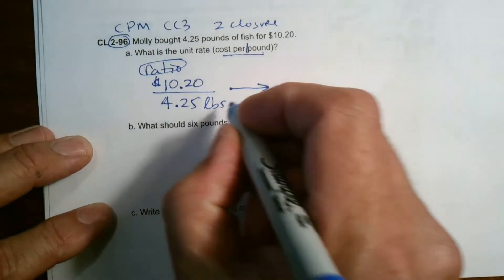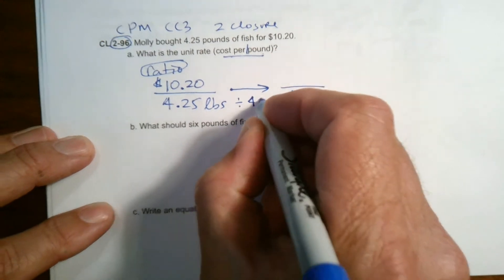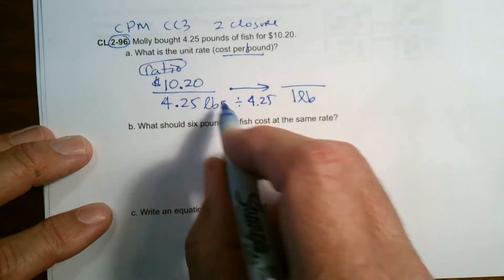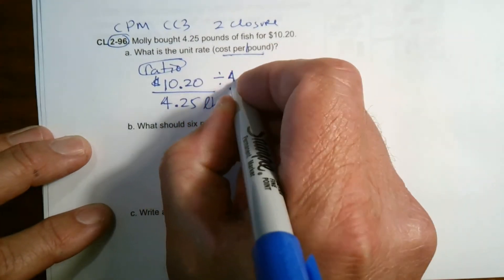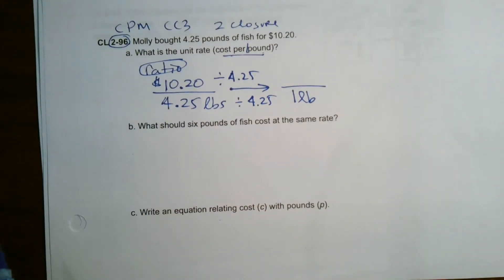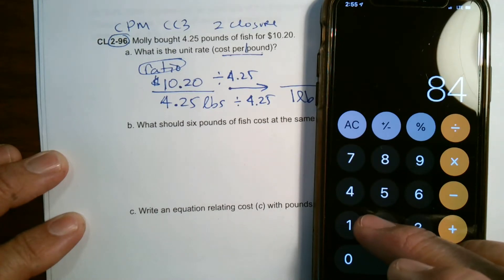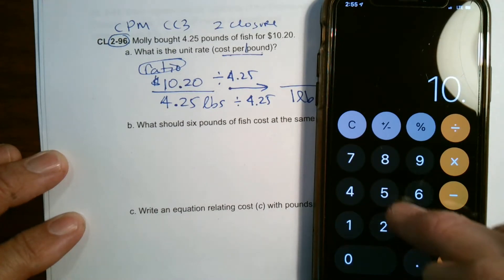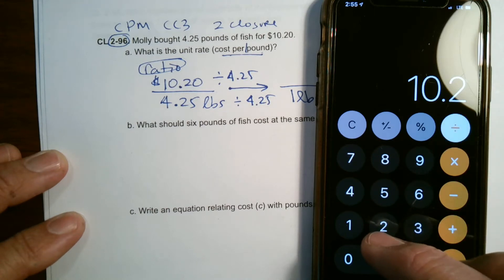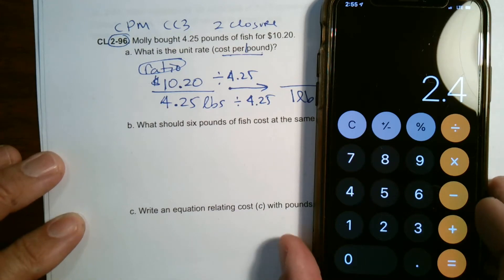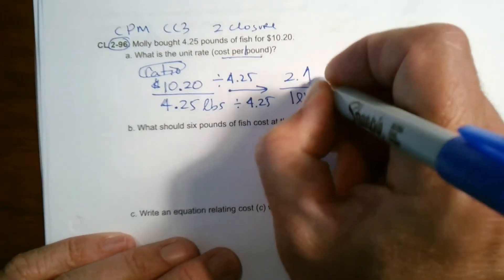Well, to get to be one, it would just be divided by 4.25, right? 4.25 divided by 4.25 is one. So what you do to the bottom of a fraction, you always do to the top. So I need to figure out what is 10.20 divided by 4.25. So I can utilize a calculator here. So we're going to do 10.2 divided by 4.25. And that gives me 2.4.